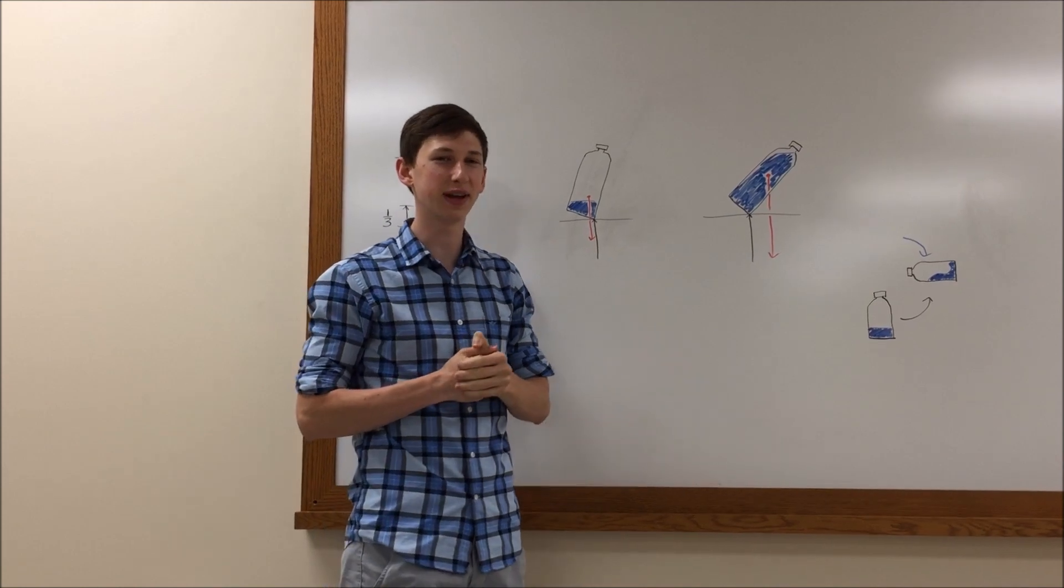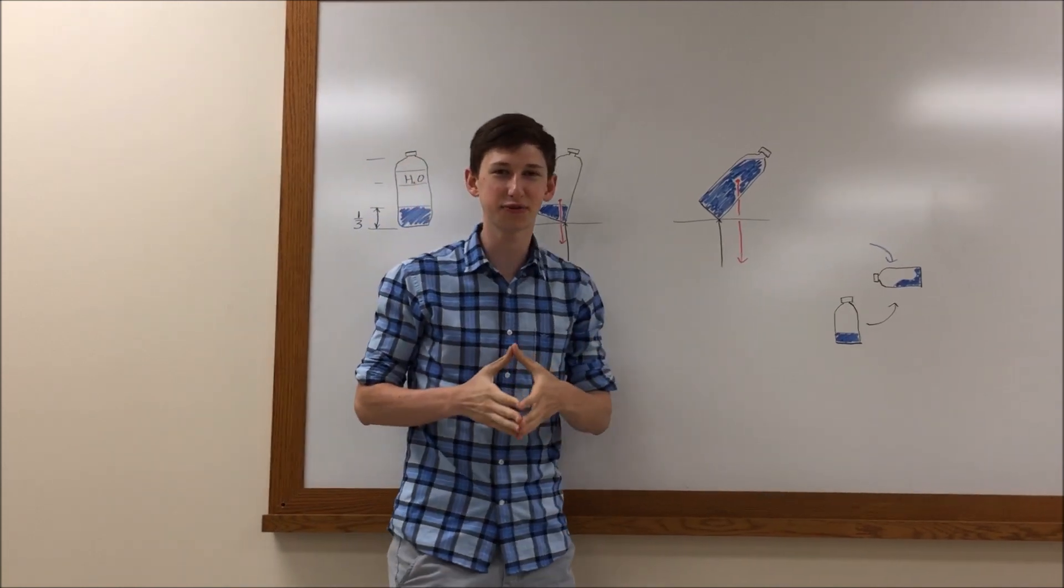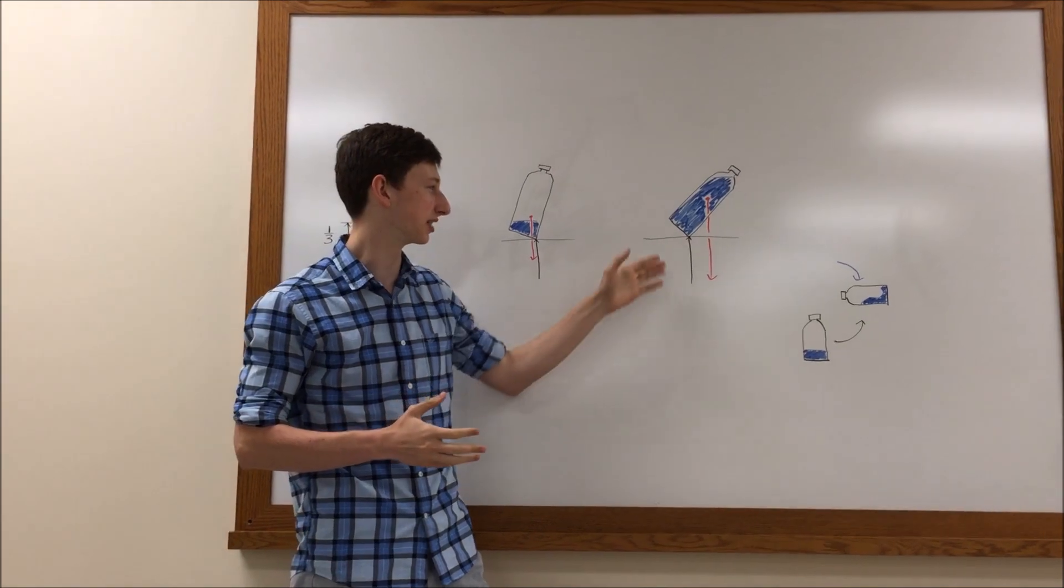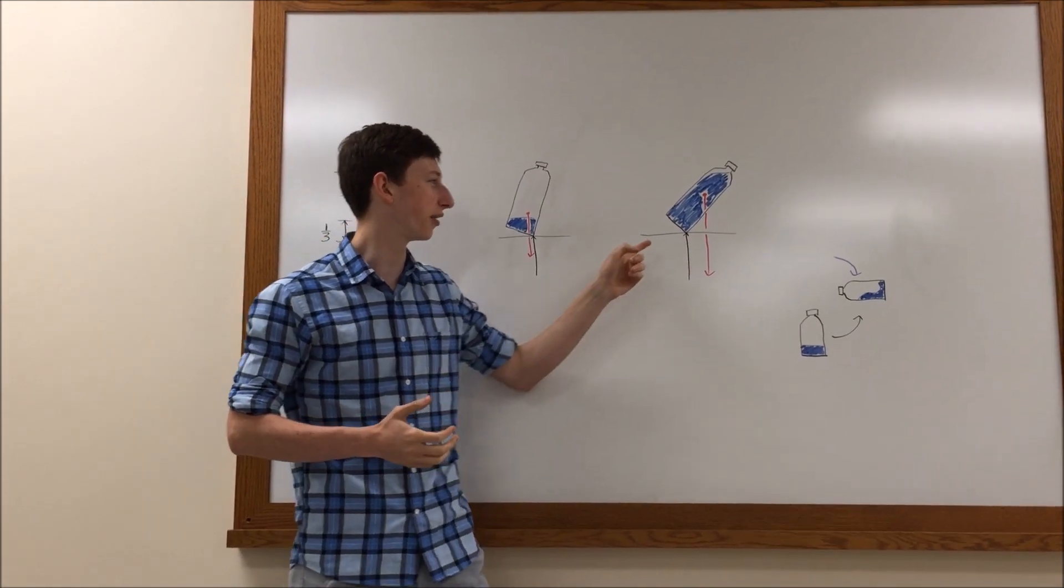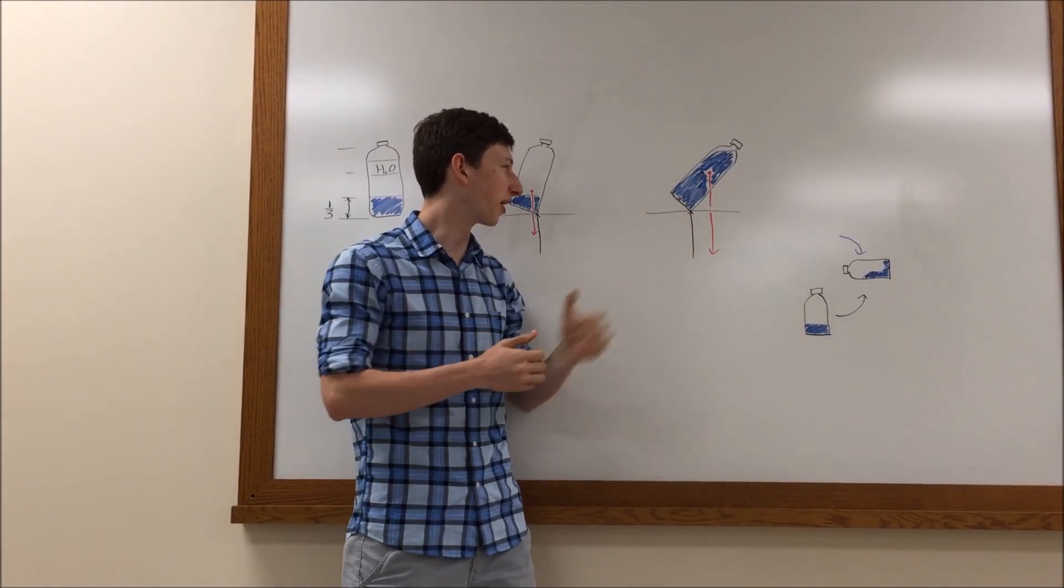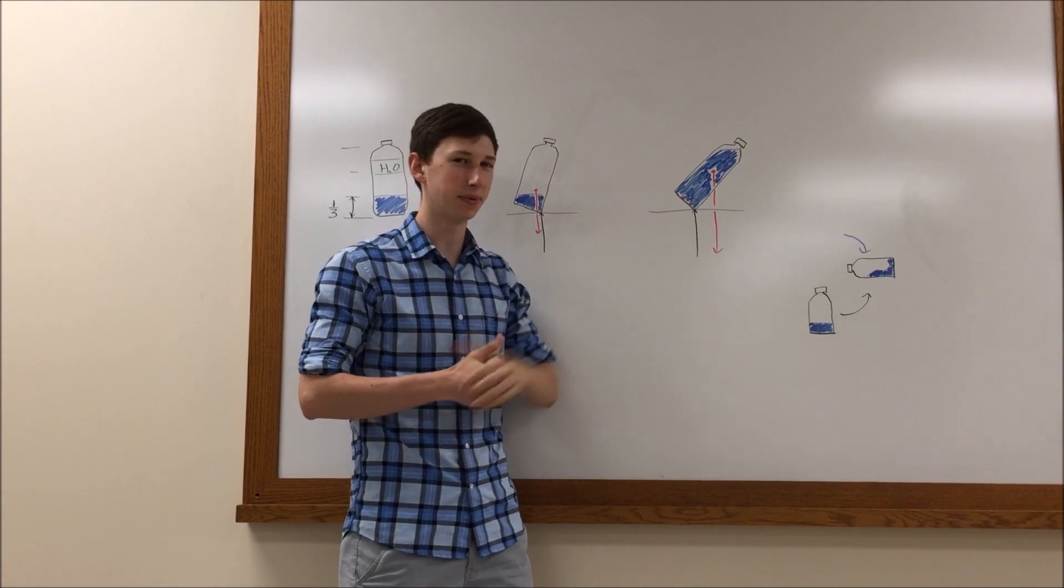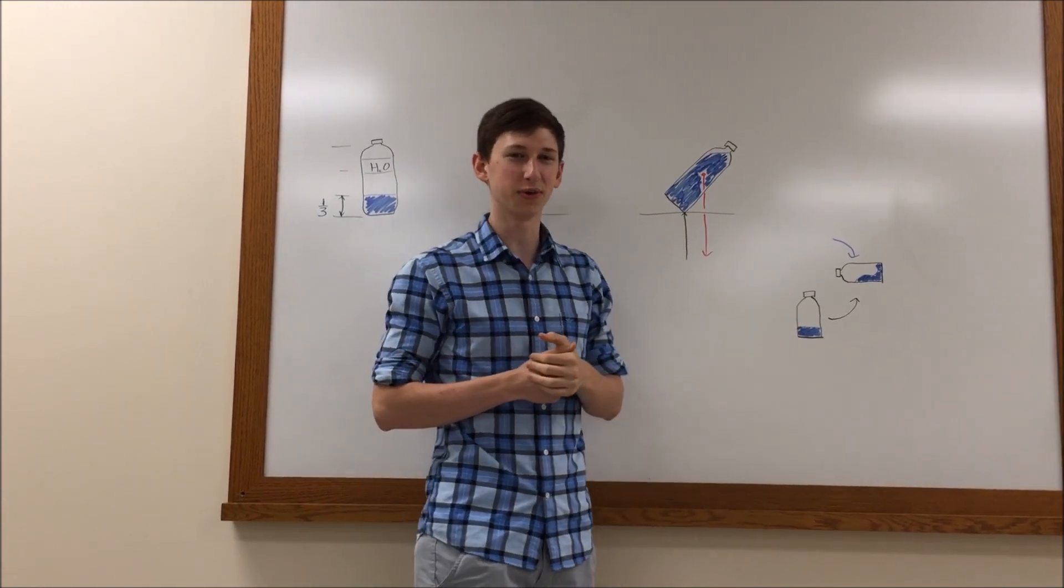So lowering the center of gravity of the bottle basically makes it easier for the bottle to get into an upright position after it lands. As you can see, on this full bottle, the high center of gravity makes the bottle want to tip over. So the first reason: lower center of gravity.